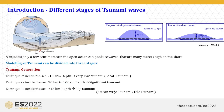In the introduction part, as we know, the different stages of the tsunami are: generation, propagation, and run-up. Compared to our regular wind-generated waves, the tsunami wave has a high wavelength and high speed. Only a few centimetres in the open ocean can produce waves that are many metres high on the shore. In this modelling, we have considered three stages.